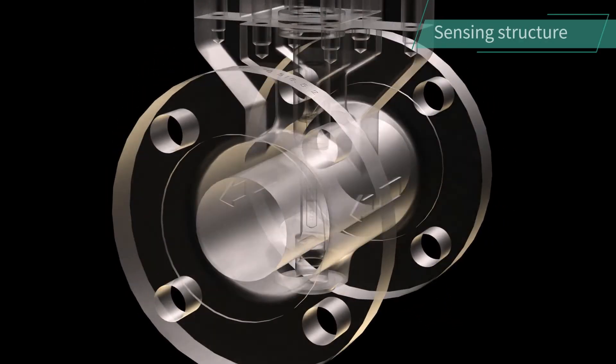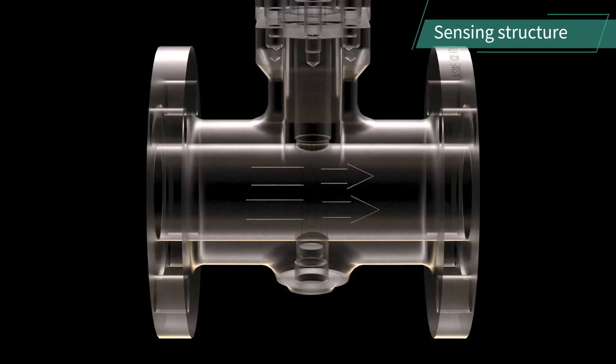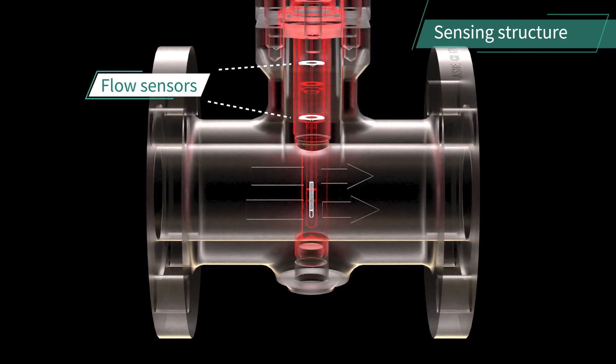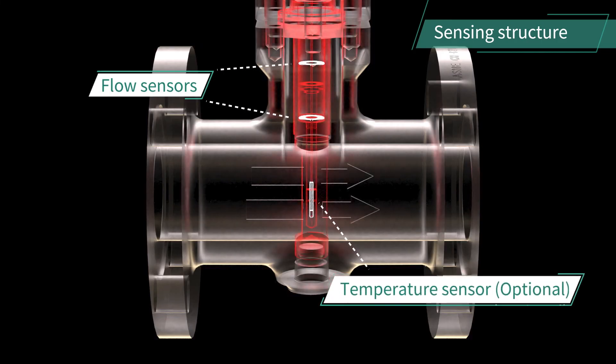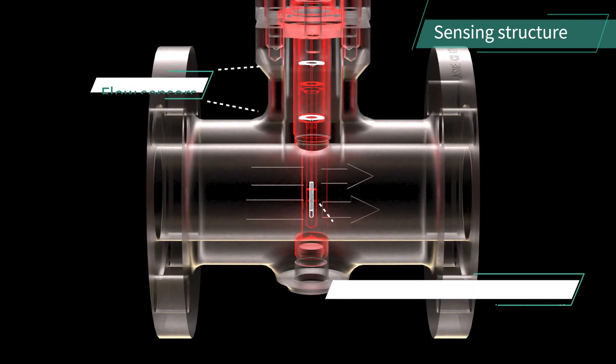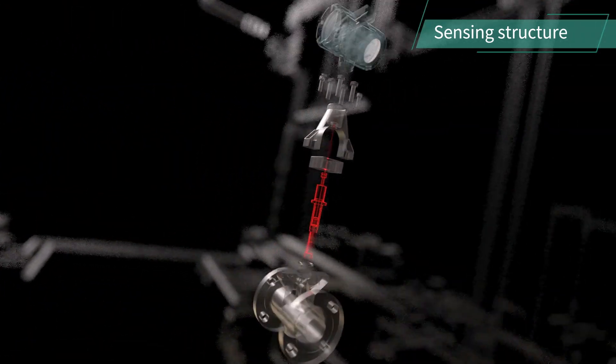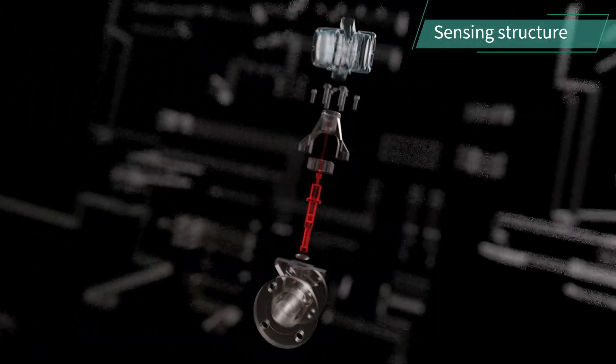Yokogawa's Vortex Flow Meters have a unique integrated structure that incorporates two flow sensors, and a temperature sensor can also be built in as an option. In addition to stable measurement, the integrated structure is robust and easy to remove for maintenance.